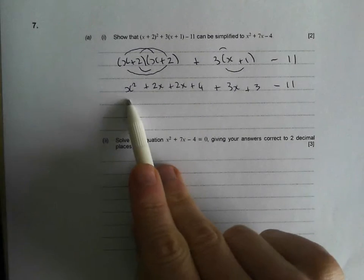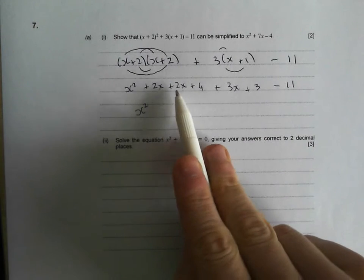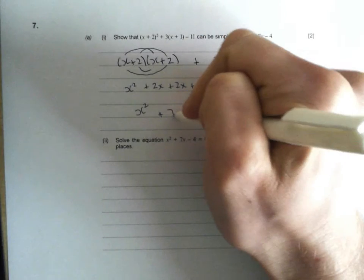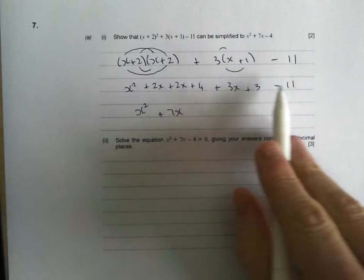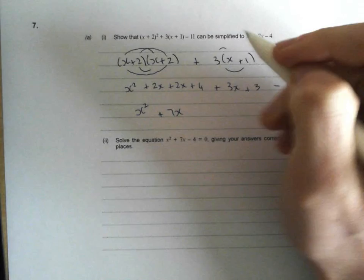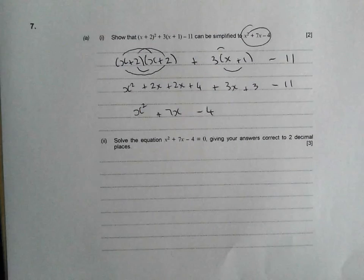Let's see what we've got here. We've got x squared, no other x squareds going around. 2x plus 2x is 4x plus another 3x, we've got 7x. 4 plus 3 is 7, take off 11, 7 take off 11 minus 4, which is exactly what we wanted. Nice.